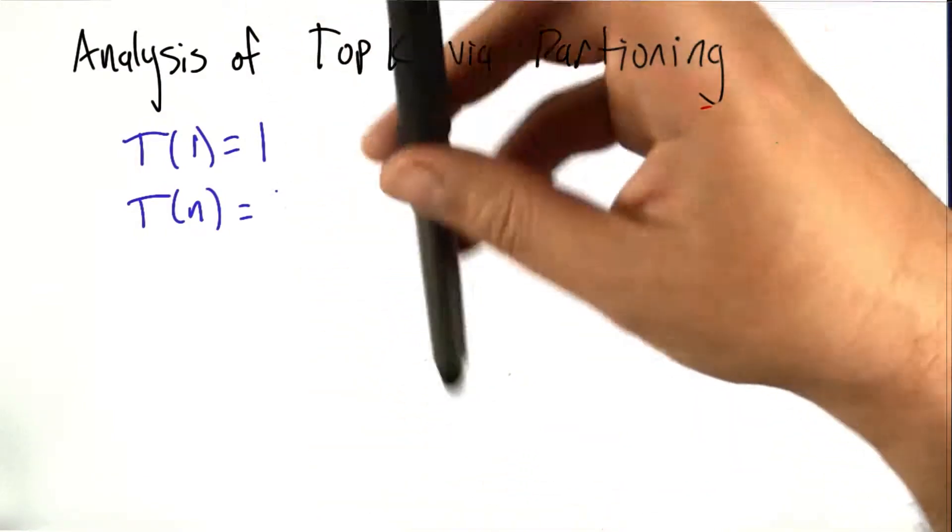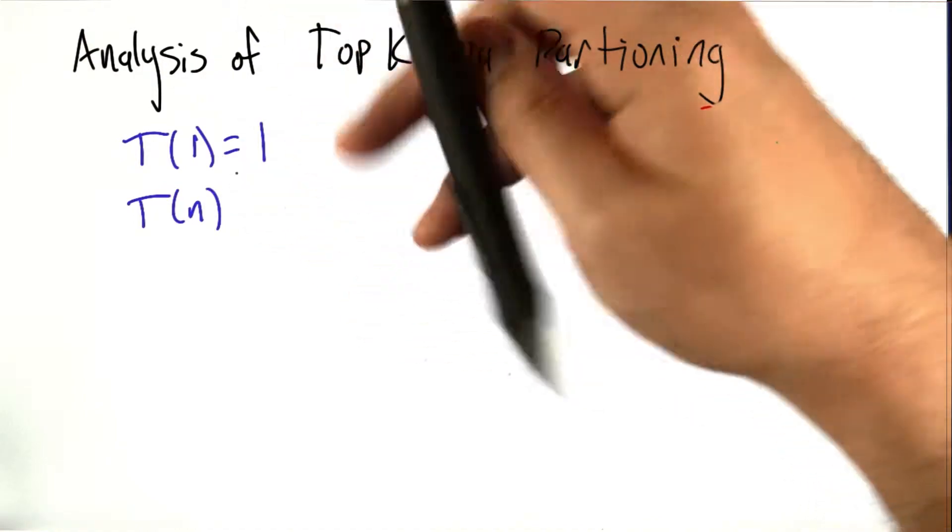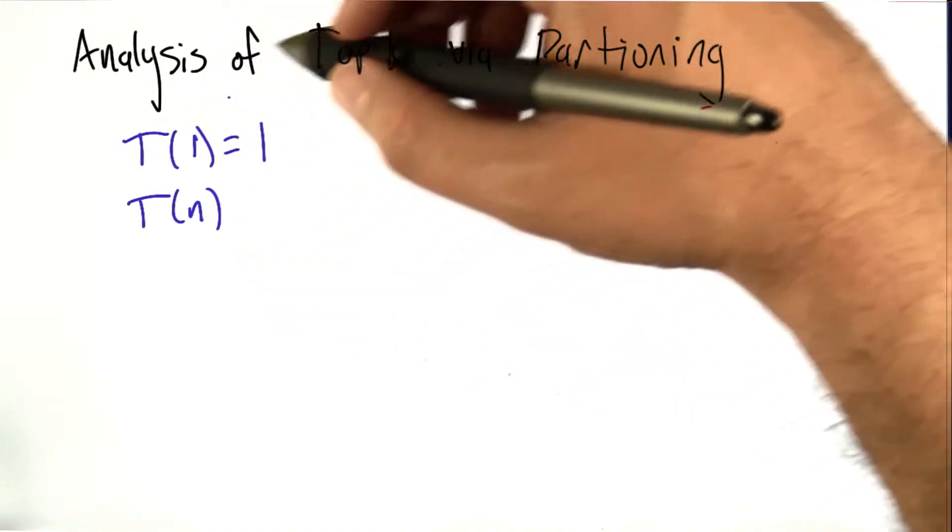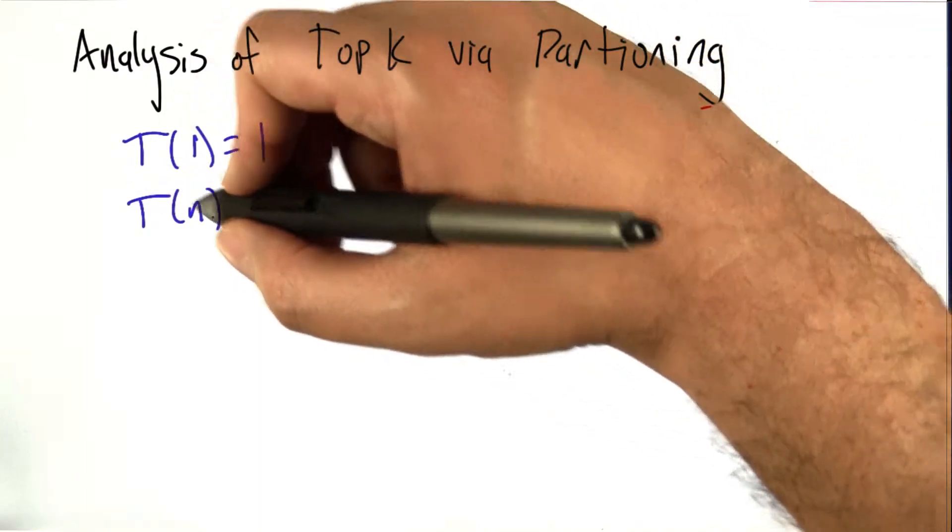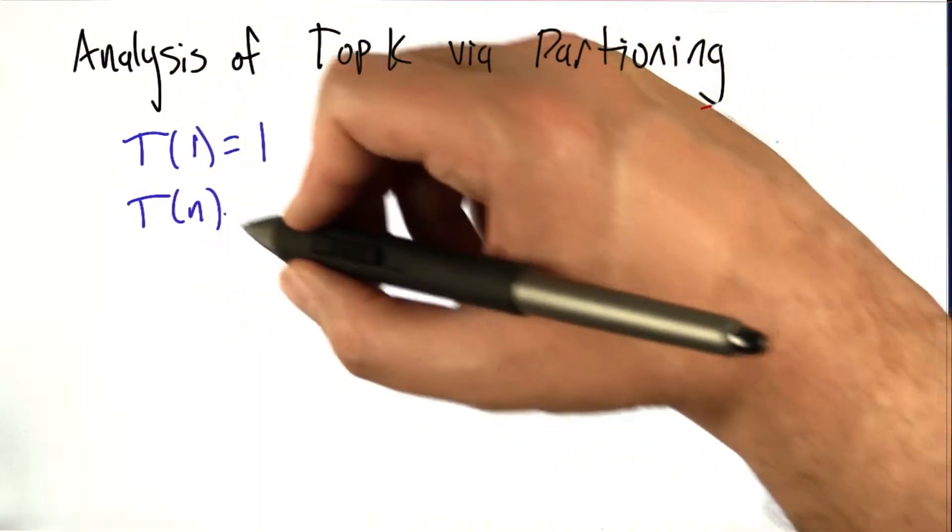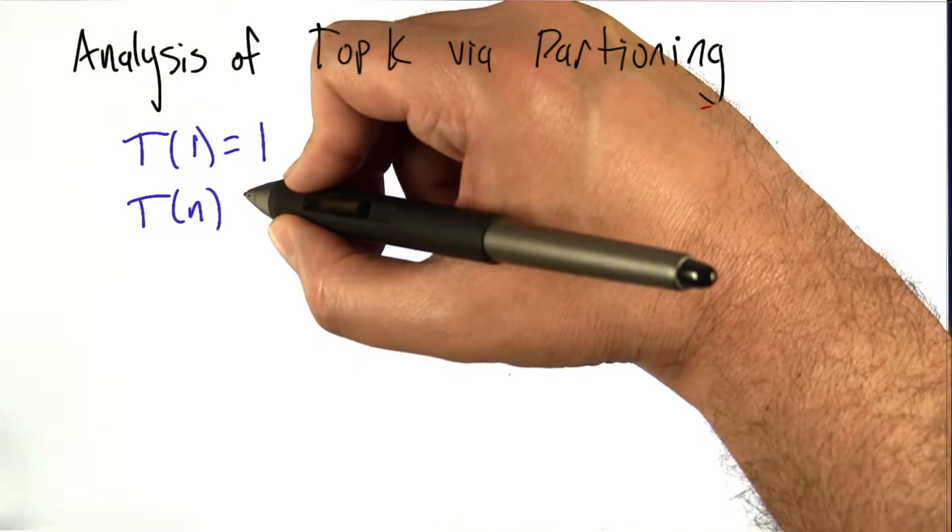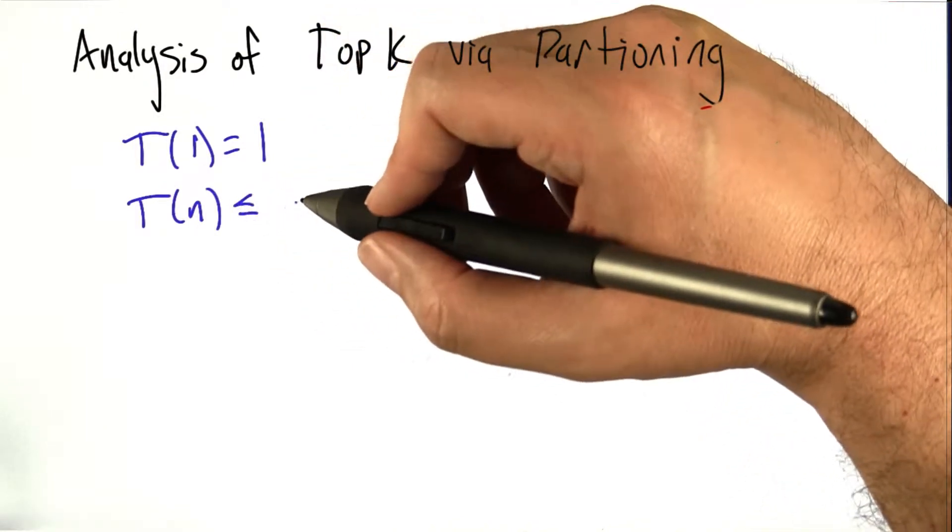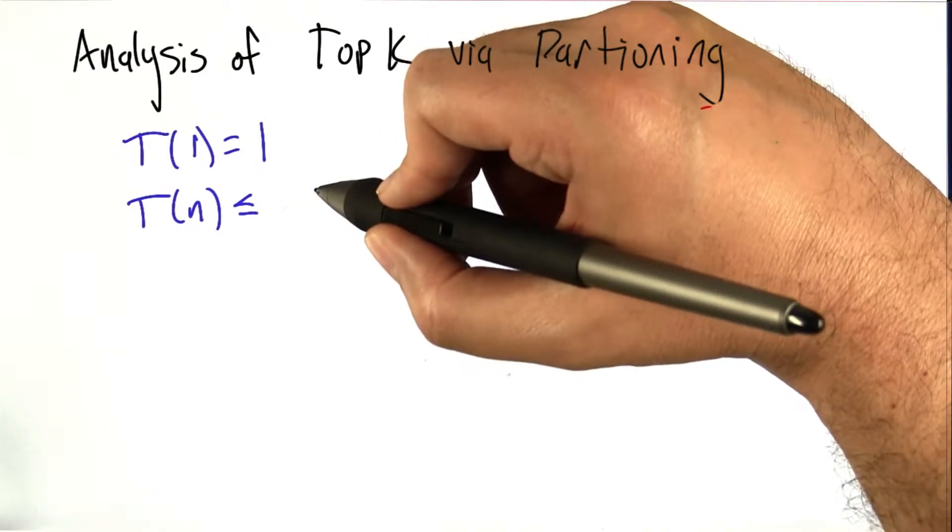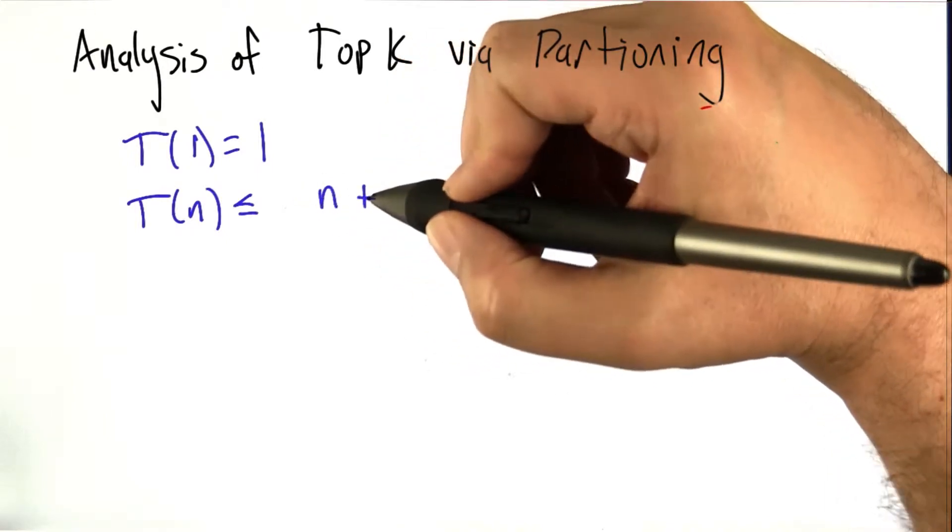Here's the recurrence relation we want to solve. The time it takes to run top k via partitioning on one element, we'll call that 1. And the time that it takes to run on n elements is going to be hard to write down exactly. But we can put down a bound. So what does it do? First it does the partitioning operation, which runs through all the elements of the list. That takes time n.